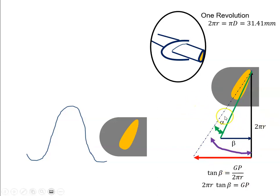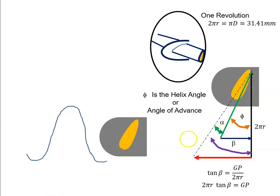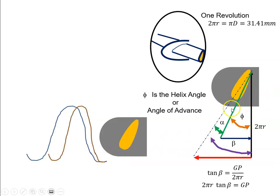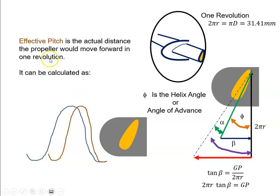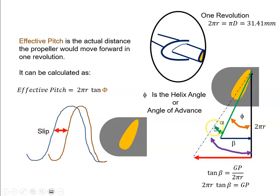We now introduce a new angle — this angle in here — called the helix angle or the angle of advance. We can work out then, if we have this angle, what the effective pitch is — that is the actual distance the propeller will move forward. It will be a lot less. You can see that the helix angle is smaller than the blade angle, so it's not going to go as far forward, and the pitch is not going to be as great. So the effective pitch is the actual distance the propeller will move forward in one revolution, calculated as 2πr·tan(φ). The difference between geometric pitch and effective pitch is called slip, and it relates to the angle of attack.